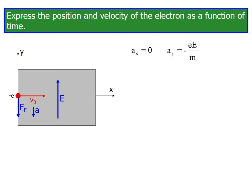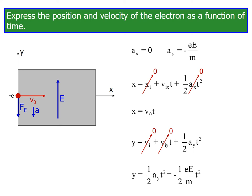x equals xi plus vix t plus one half ax t squared. xi, initial distance, is zero and initial acceleration is zero. y equals yi plus viy t plus one half ay t squared, which equals minus one half eE divided by m t squared.